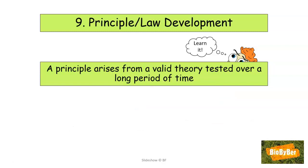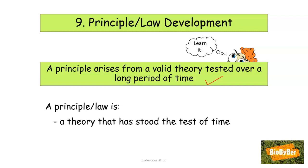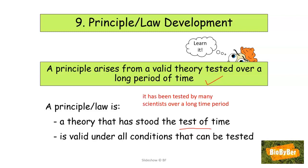Finally, we have the last step in the scientific method: the development of a principle or law. A principle or law arises from a theory that's valid, that has been tested and supported over a long period of time — then it gets a promotion and becomes a law. A principle or law is a theory that has stood the test of time, said to be valid under all conditions that can be tested. We have examples of laws already — Mendel's law of segregation in genetics.